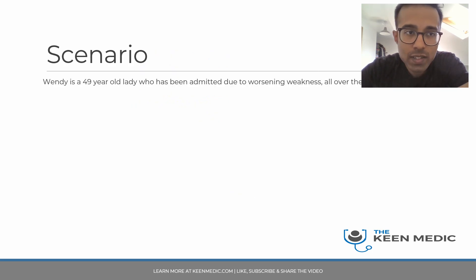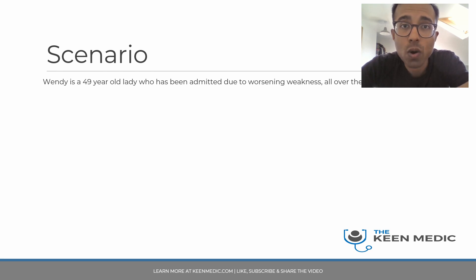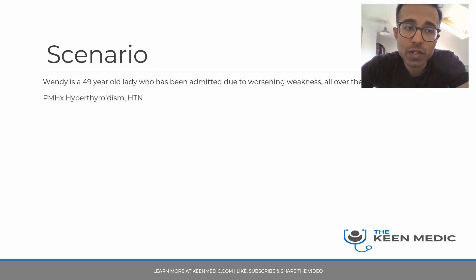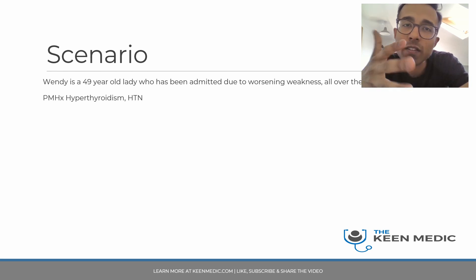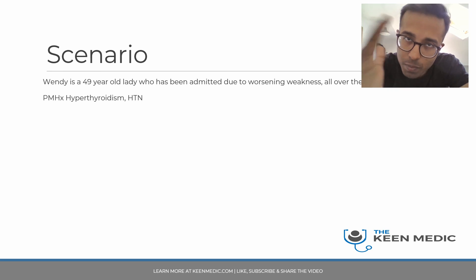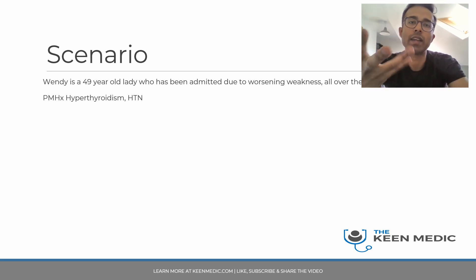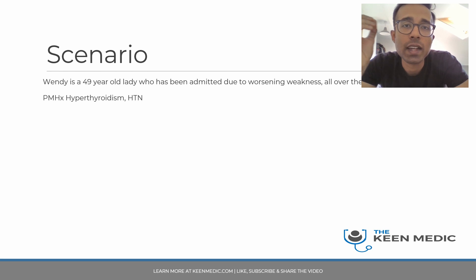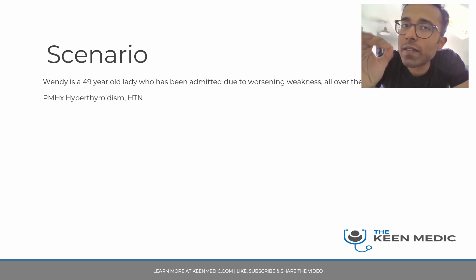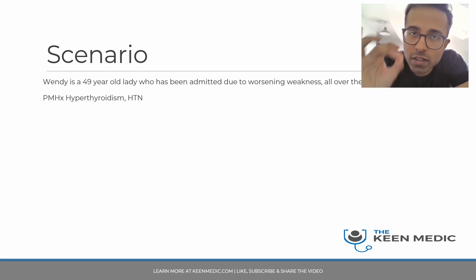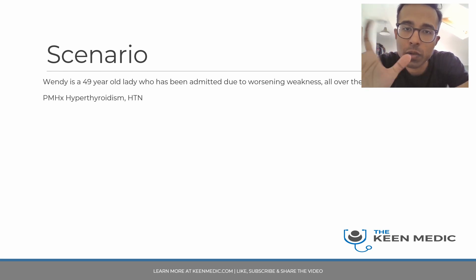So the scenario is: Wendy is a 49-year-old lady who has been admitted due to worsening weakness all over the body. Past medical history: she's got hypertension and hypothyroidism. The key thing here is she's kind of middle-aged and has weakness all over the body. This doesn't sound like an acute vascular event, because if it was an acute vascular event, you wouldn't get weakness all over the body.